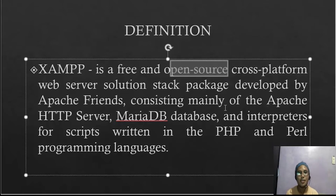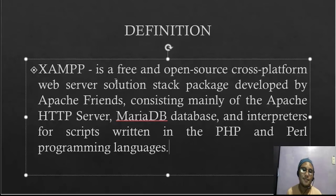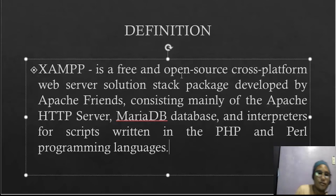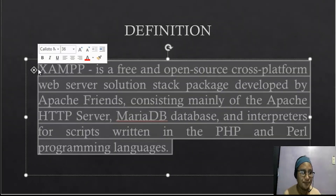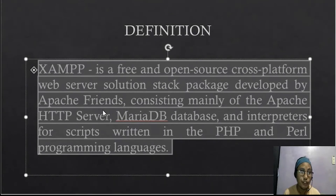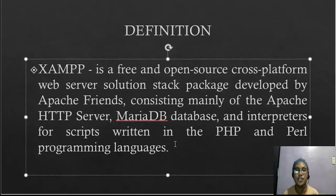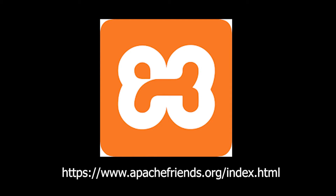When we say open source, it refers to something people can modify and share because its design is publicly accessible. XAMPP is used to create a server for our database in order to connect our programming and markup languages — connecting our programming language code with our HTML code. You can download this application using the provided link.